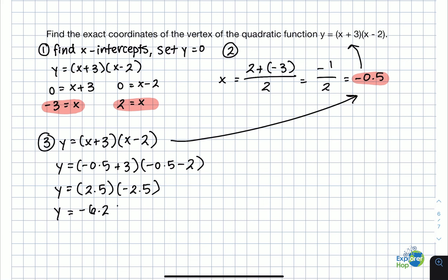Therefore, now we have the y-coordinate, and we have the x-coordinate of the vertex. Therefore, the vertex of this quadratic is negative 0.5 and negative 6.25. Thank you for joining us. We'll see you in the next lesson.